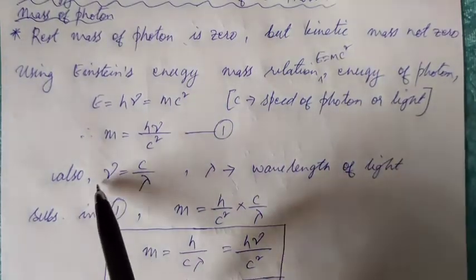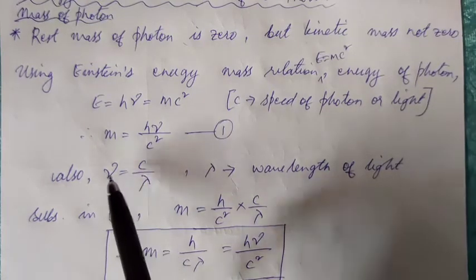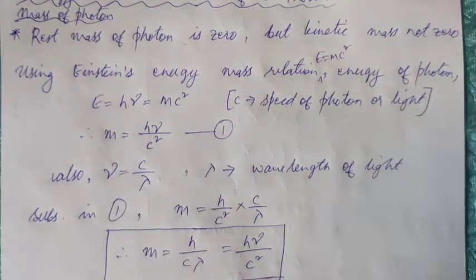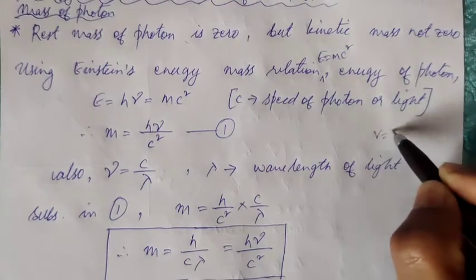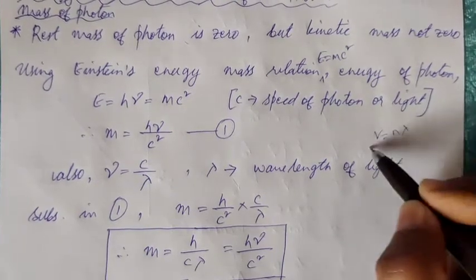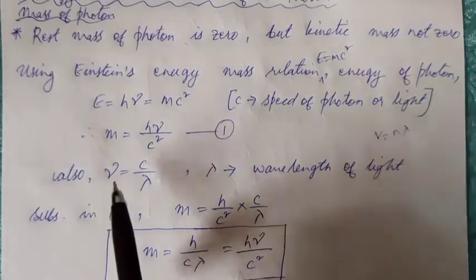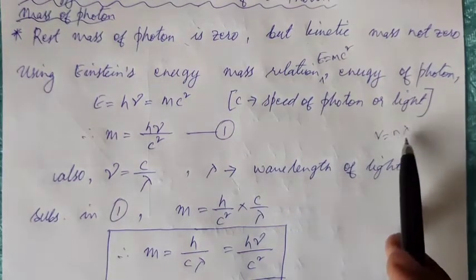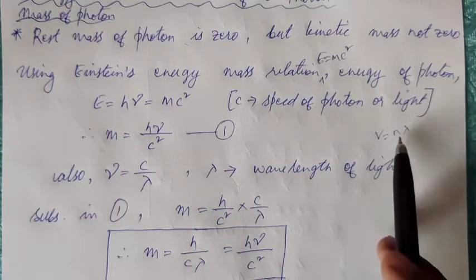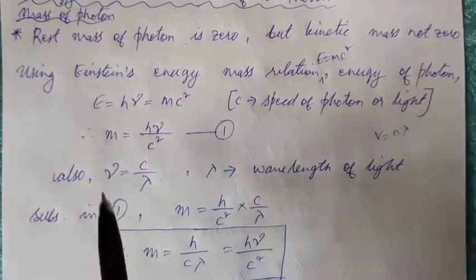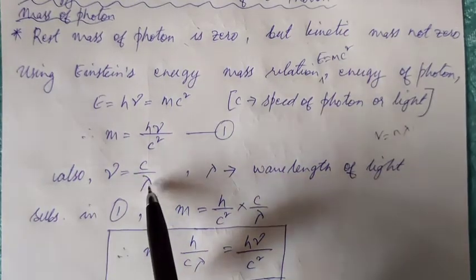Now, from the famous relation between velocity, frequency, and lambda, v is n lambda. Many a times we see this written. From here, the frequency, where n is frequency, lambda is wavelength. Instead of n, we have nu written over here. So, nu is c by lambda for a photon.